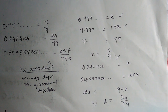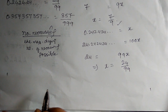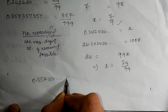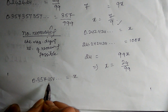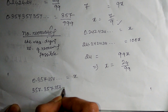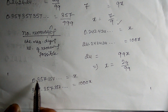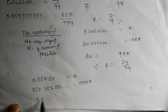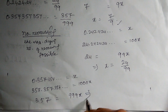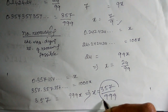This gives x equals 24 by 99, which is what we wrote. Now the third one: 0.357357 and so on. Let this be x. As it is a three-digit repeating number, we multiply by 1000, getting 357.357357... equals 1000x. Subtract x from 1000x: 999x equals 357, so x equals 357 by 999.